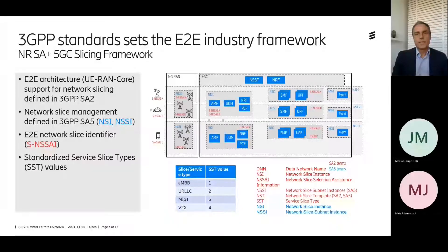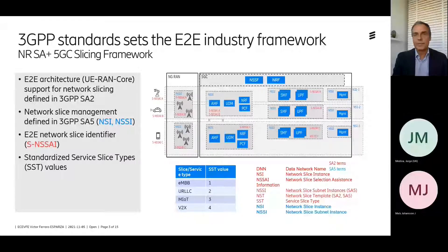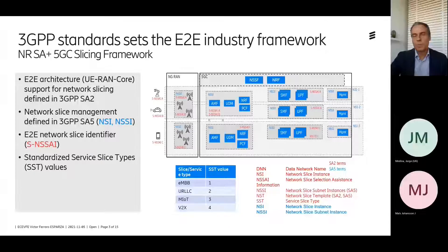One of the key themes for network slicing is the end-to-end aspects. 3GPP standards have set the industry framework in order to support end-to-end slicing. There are two important dimensions: the traffic view and the management view of network slices. Traffic aspects are basically defined in 3GPP SA2 and the management aspects are defined in 3GPP SA5. There are a bunch of identifiers that need to be configured and deployed comprising all network functions end-to-end — starting from the device, going to the access network, to the transport and to the core network.